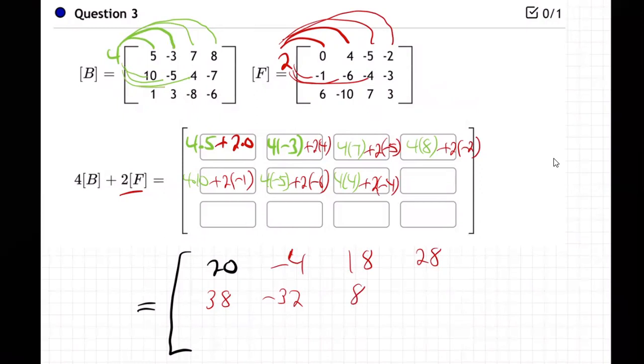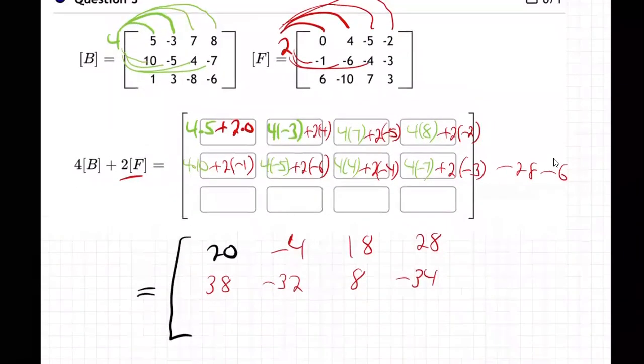And four times minus seven plus two times minus three. That's minus 28 minus six, which is minus 34. All right, we're two thirds of the way done.